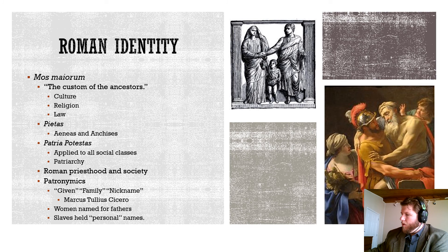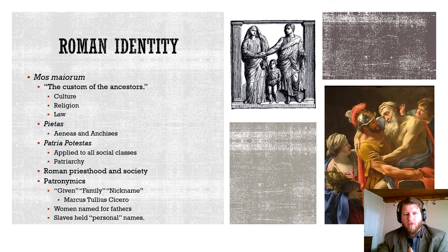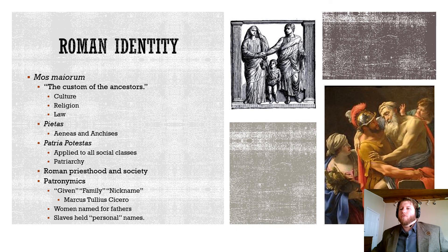We're discussing Roman identity — how the Romans would have seen themselves as a group of people. It is their culture, their way of life, all of these things blended together. We call it the mos maiorum, or the customs of the ancestors, and that's a big part of this. Their culture, religion, and laws are all pooled together, but one key element is something known as pietas — which is like dutifulness or faithfulness.